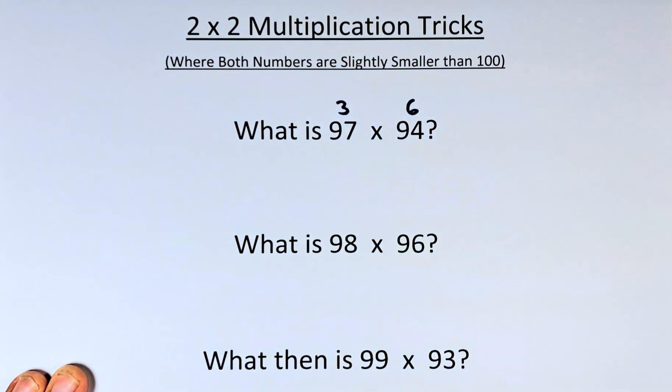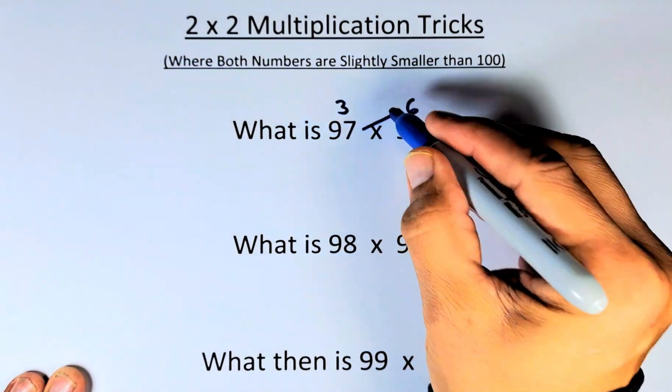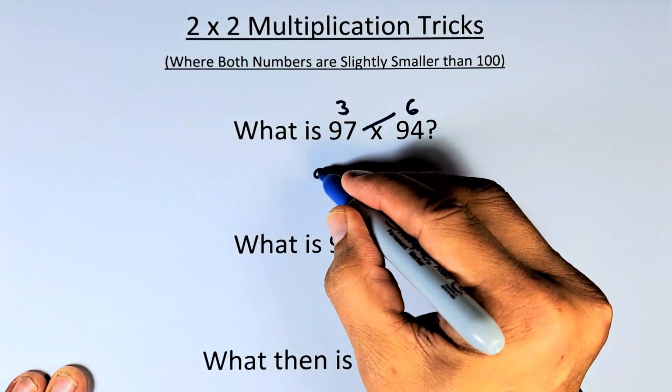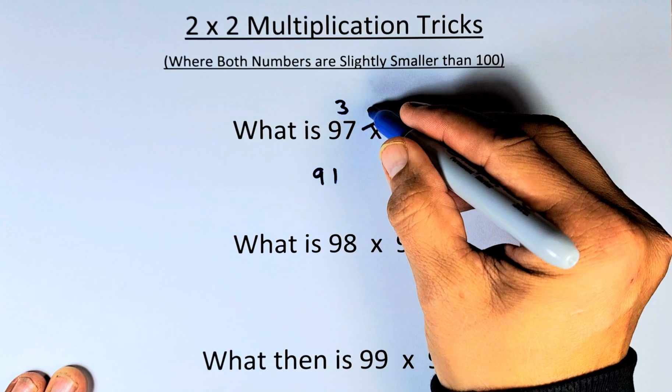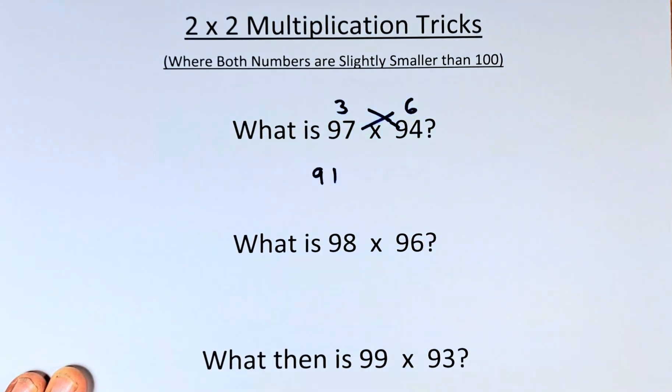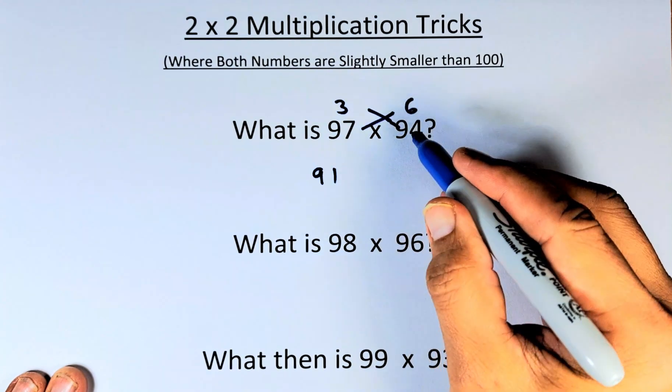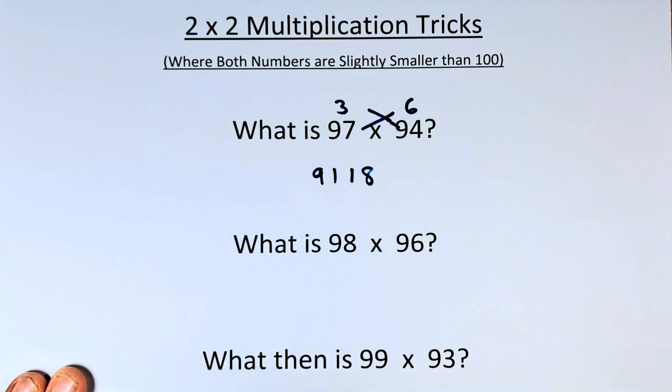The next step, you take 97 minus 6, which gives you 91. Or alternatively, you take 94 minus 3, which also gives you 91. And the last step, you take 3 times 6, which is 18. So the answer is 9,118.